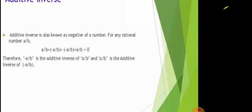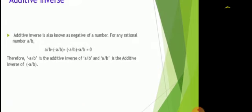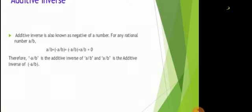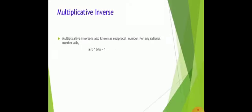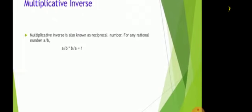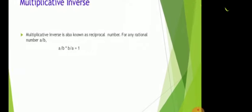Additive inverse is also known as negative of a number for any rational number a upon b. Therefore, minus a upon b is the additive inverse of a upon b and a upon b is the additive inverse of minus a upon b. Multiplicative inverse is also known as reciprocal number for any rational number a upon b is equal to b upon a.